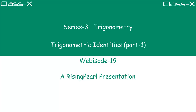Hello friends, welcome to RisingPile.com. We are talking about series 3 where we are learning a great deal on trigonometry. This is webisode number 19. Today we are going to learn about trigonometric identities, and this is part 1. We are going to probably do 3 or 4 parts and go over each of the trigonometric identities. So let's look into it.